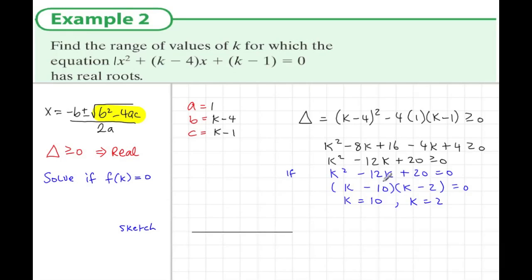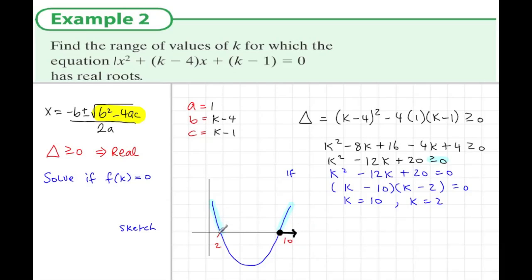Sketching this positive quadratic cutting the axis at 2 and 10, we need the region where the function is greater than or equal to 0 — that's outside the roots. So the solution is k is less than or equal to 2 or k is greater than or equal to 10. You could also verify this using the algebraic test method shown in Example 1.